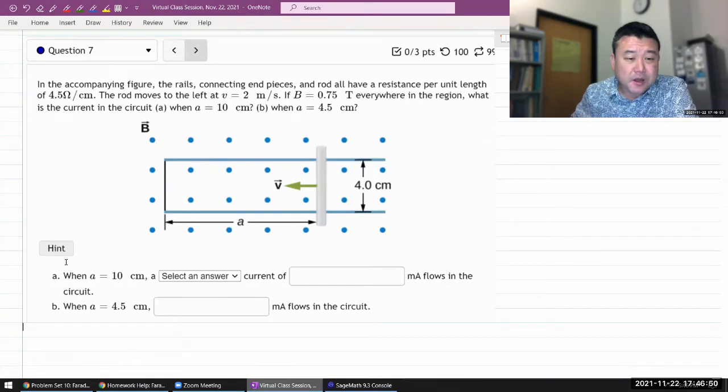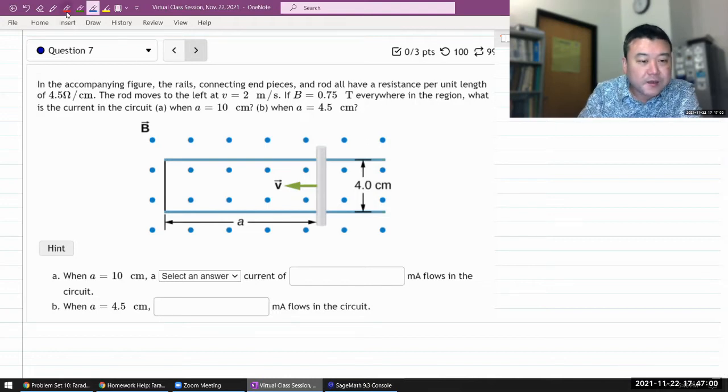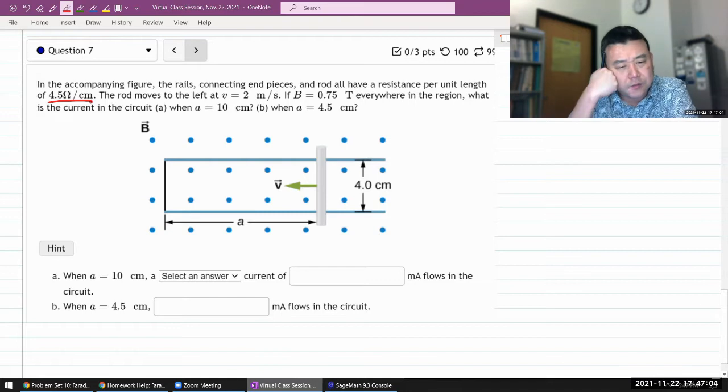So it says in the accompanying figure, the rails, connecting end pieces, and the rod all have some resistance. So we have this quantity here. I don't know if there's a standard symbol for resistance per unit length. Let me just call it lambda.